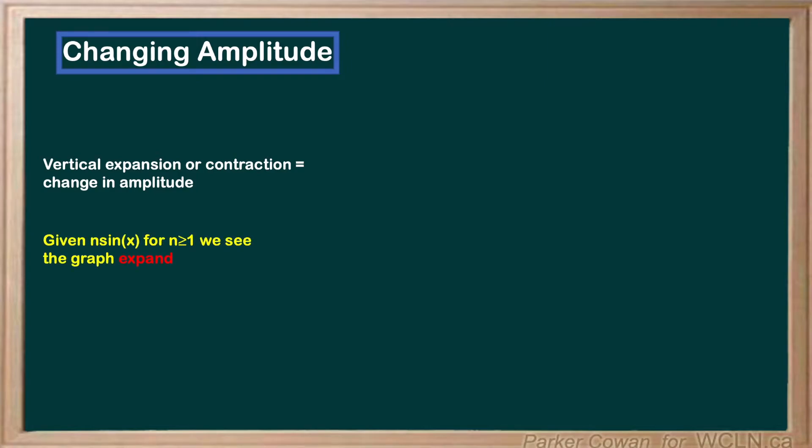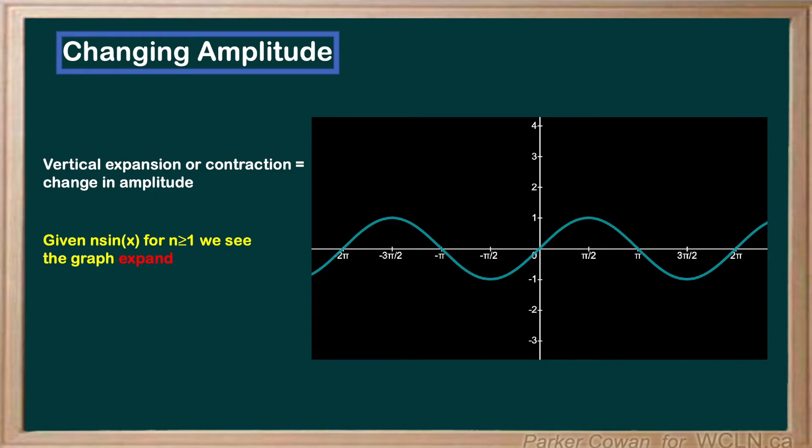When we apply a coefficient greater than 1 to the outside of a sinusoid, we actually see the graph expand vertically.